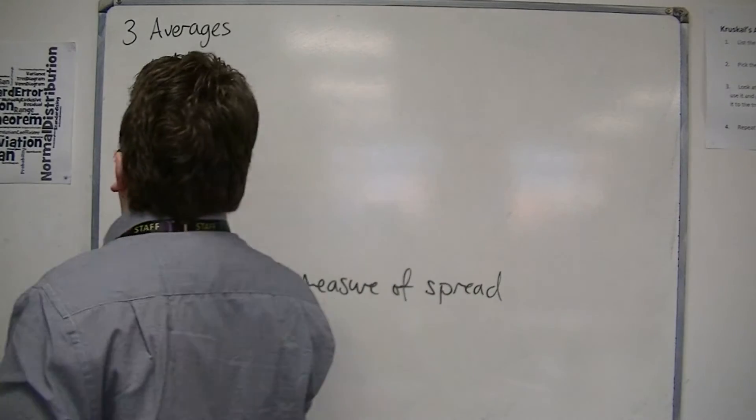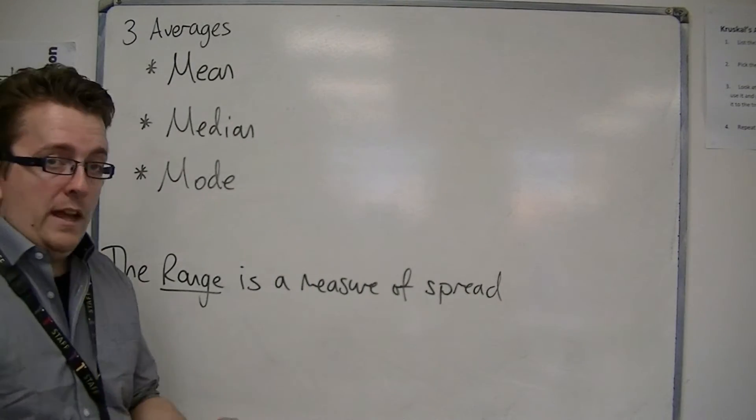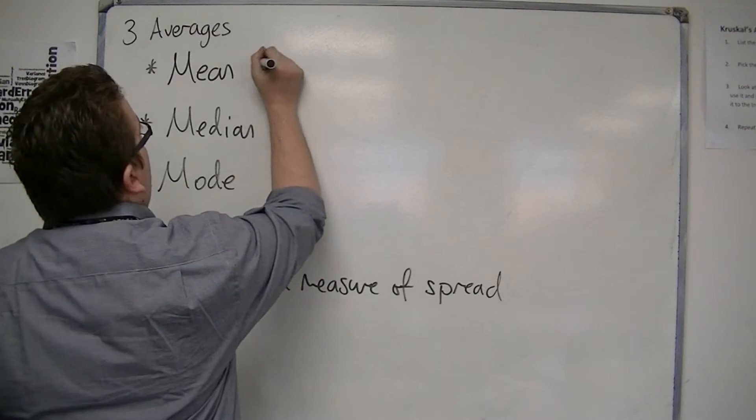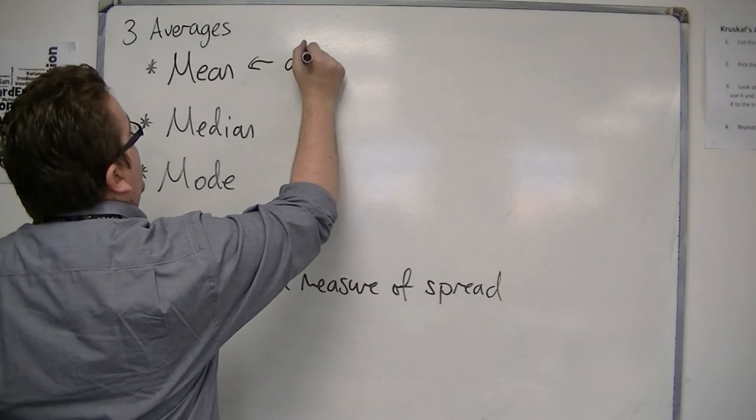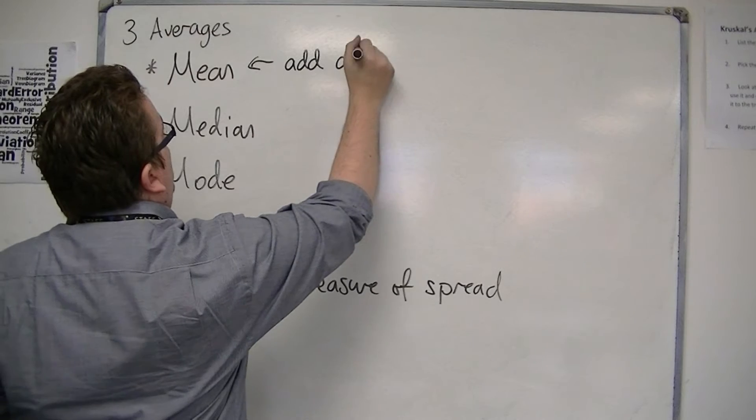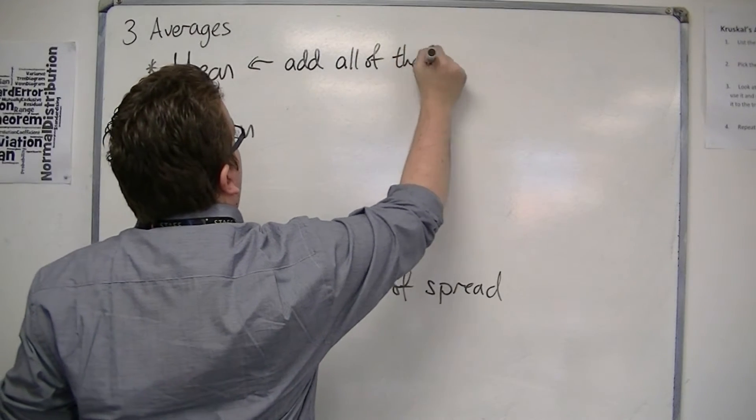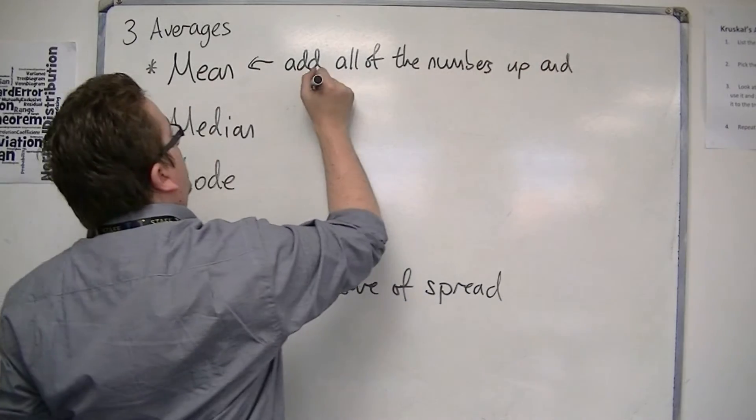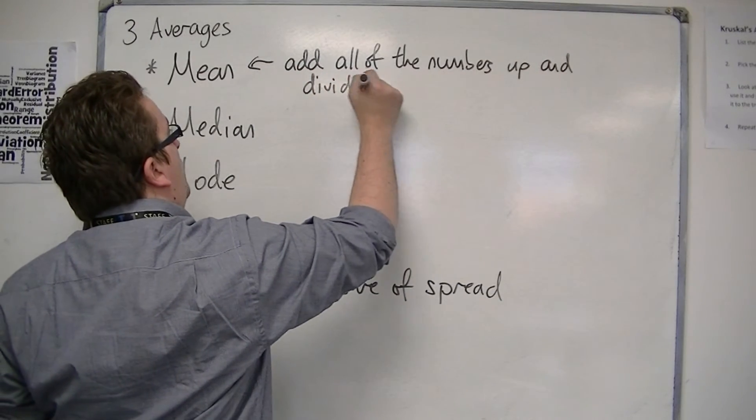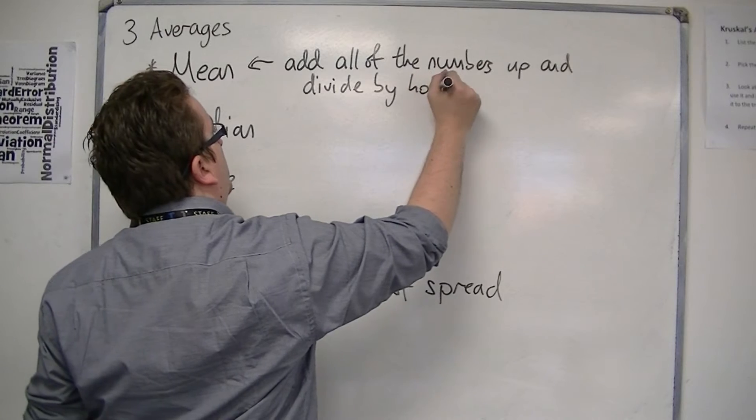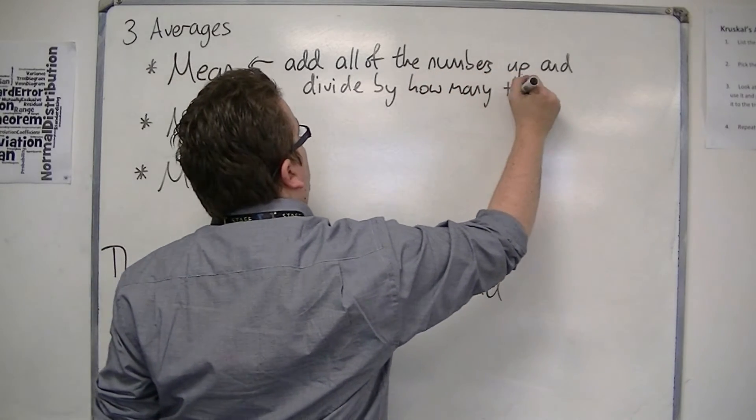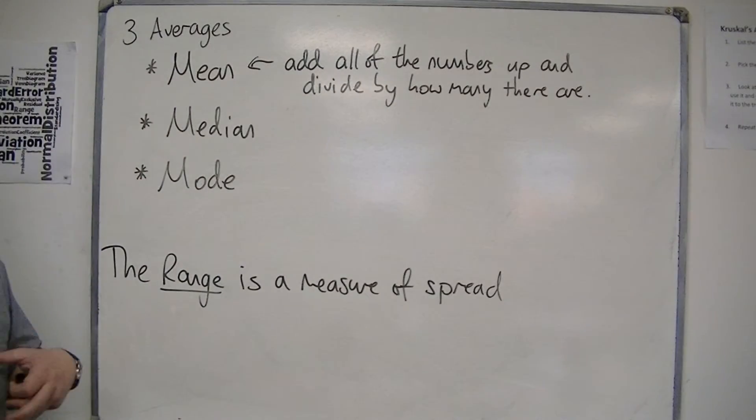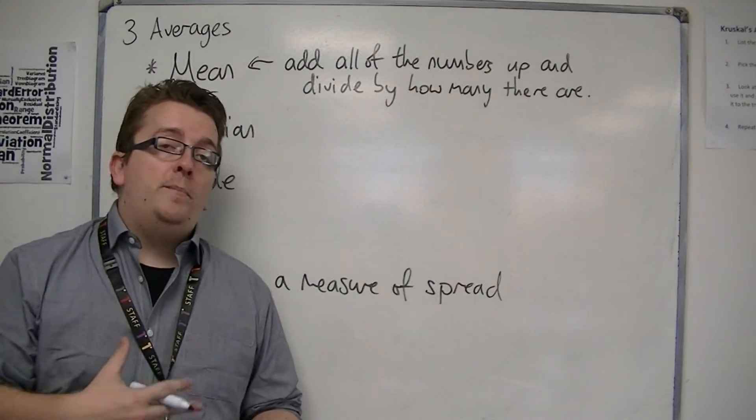So when we're looking at these, we're going to be looking at how we calculate them. So the mean, for the mean, we add all of the numbers up and divide by how many there are. So that is the mean. We add them all up and divide by how many there are.